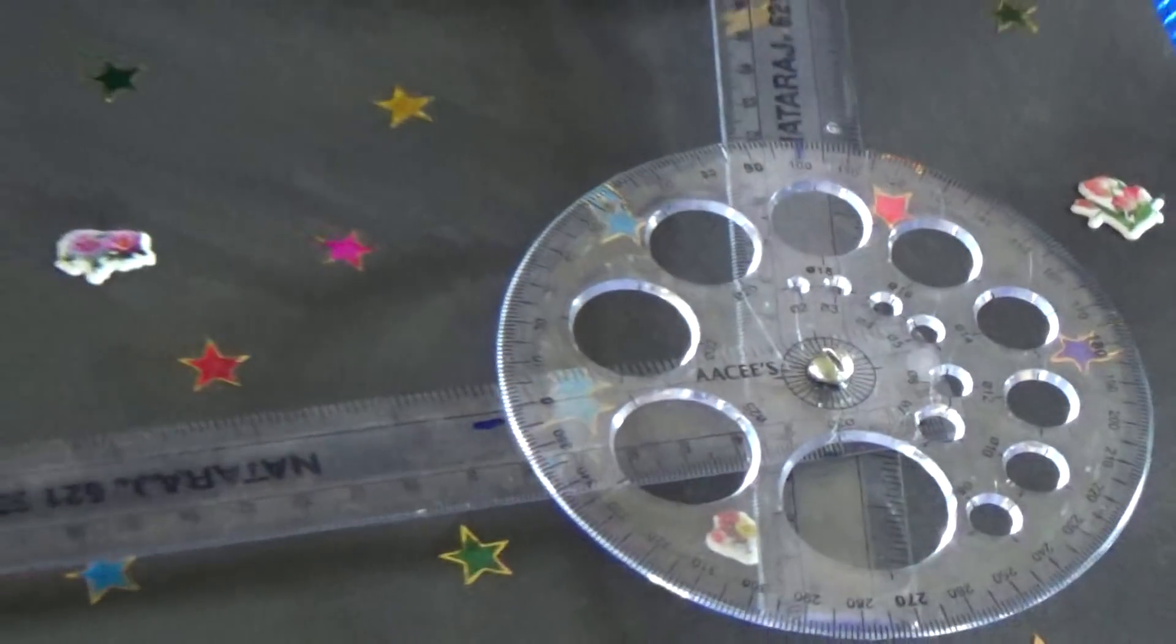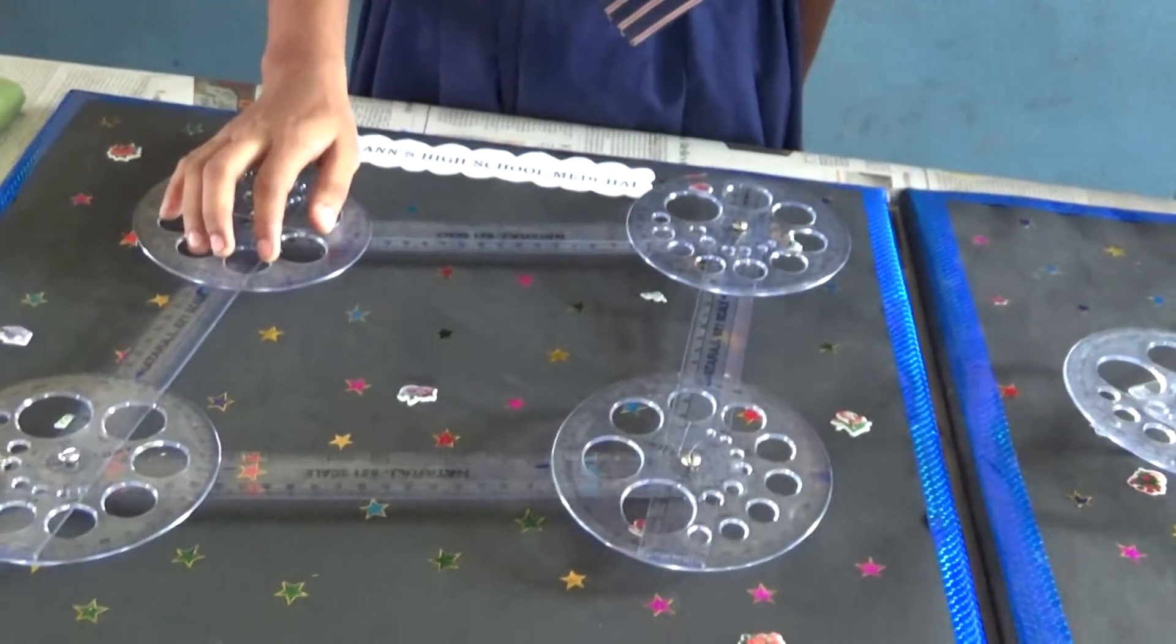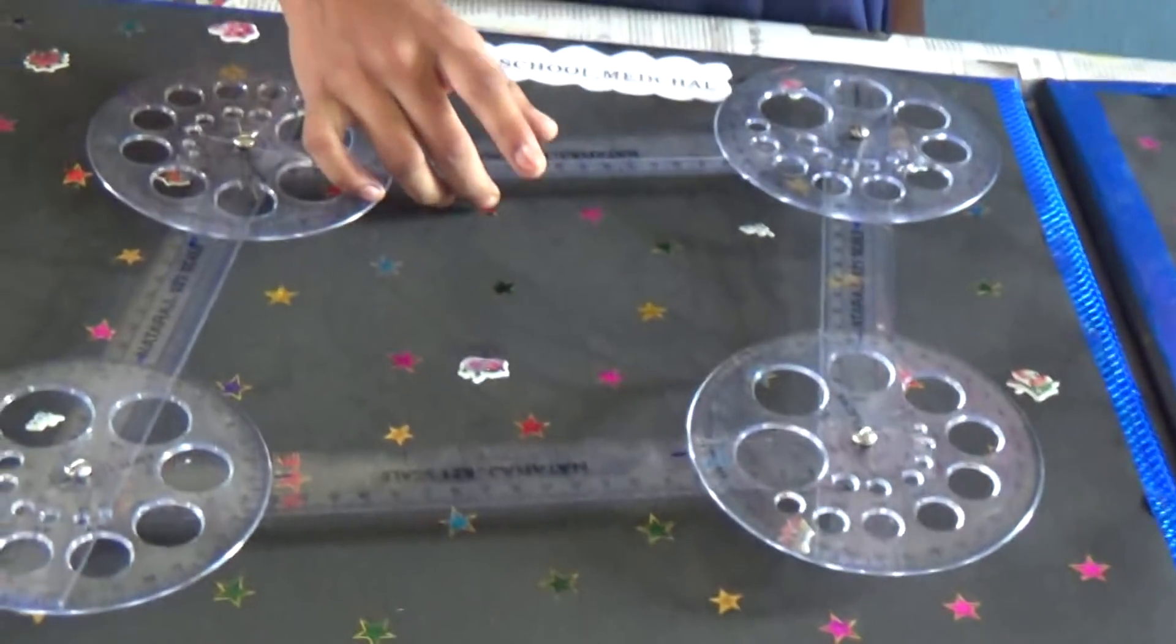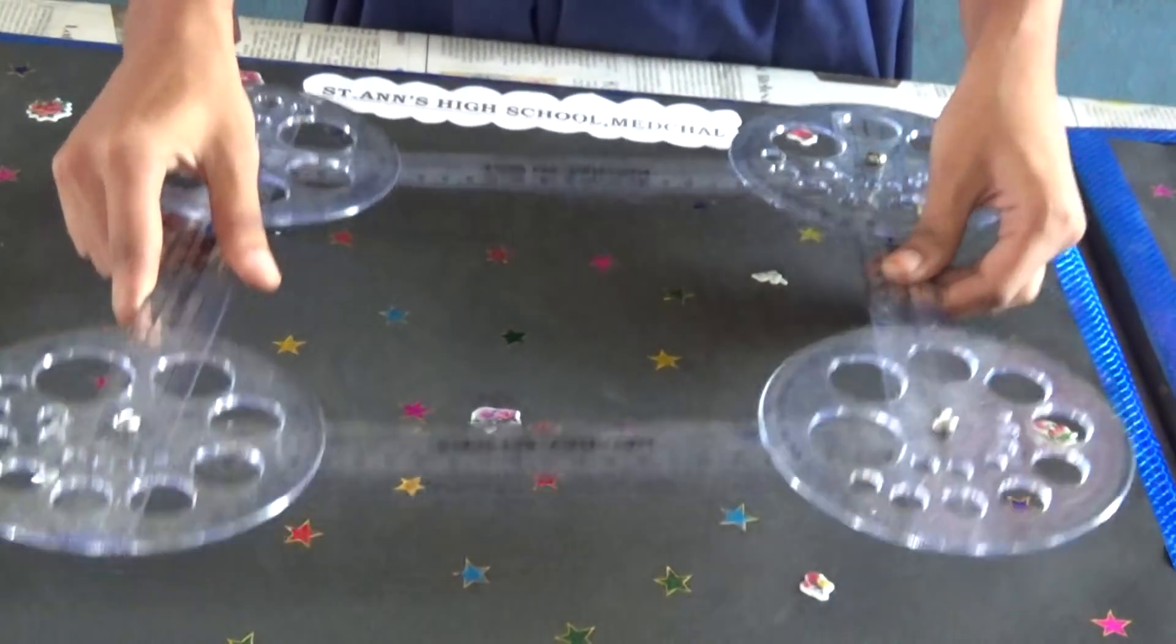In parallelogram, the angles are known as right angle. And if one angle is known as right angle, then the other angles are also known as right angle. And it becomes a rectangle.